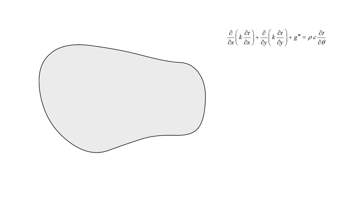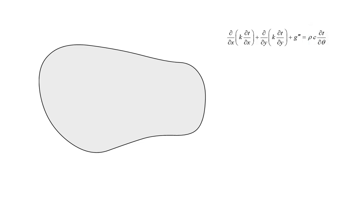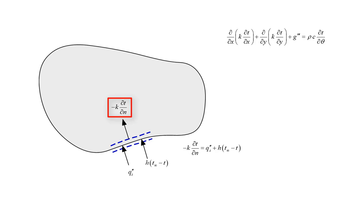We're going to solve this governing differential equation over this domain. This is a conduction problem — here are the conduction terms. There's the potential for some volumetric generation, and the transient term comes from heat storage. On the boundaries, we admit the possibility of a specified heat flux and convection, which must sum to equal conduction perpendicular to the boundary. The normal vector n is defined as perpendicular to the boundary. For a transient problem, we also need initial conditions — the initial temperature distribution over the entire computational domain.